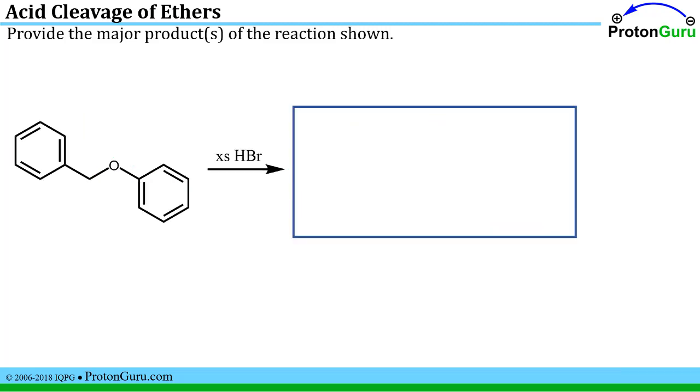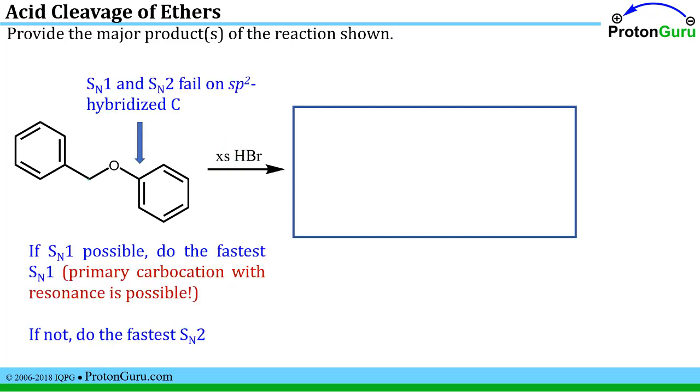Here's another case. Provide the major product of this reaction. It's again an ether reacting in this case with an excess of hydrobromic acid. Now with an excess of hydrobromic acid, you could potentially do a reaction where you attack both sites to which the oxygen is attached. But let's think this through. We know that we would preferentially do the SN1 reaction. The first thing we hopefully notice is that neither the SN1 nor the SN2 would work on this sp2 hybridized carbon. We can't attack that carbon with a nucleophile by either of those mechanisms.